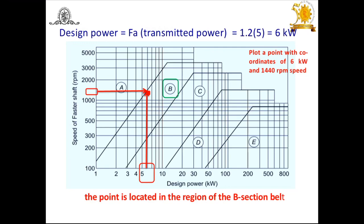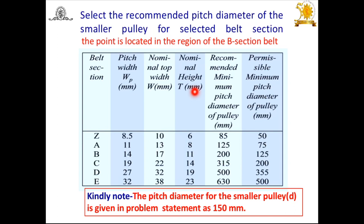After selecting section B, we would normally select the recommended pitch diameter of the smaller pulley from the chart — for section B, the recommended smaller pulley diameter is 200 mm. However, in this problem the pitch diameter of the smaller pulley is already given as 150 mm. So there is no need to select from the chart; we use d = 150 mm as given.